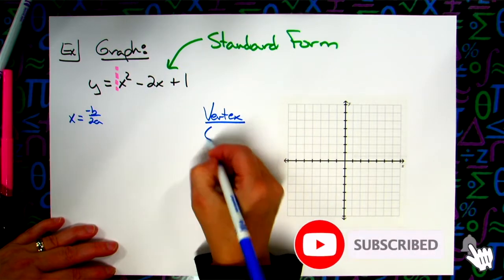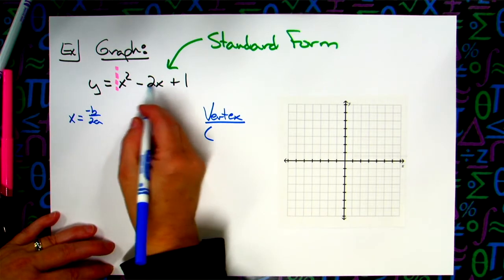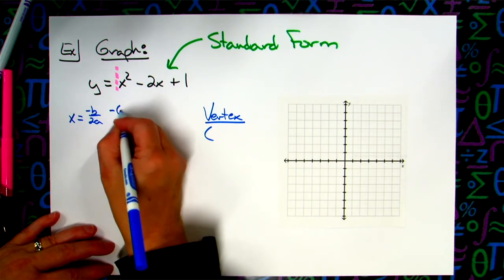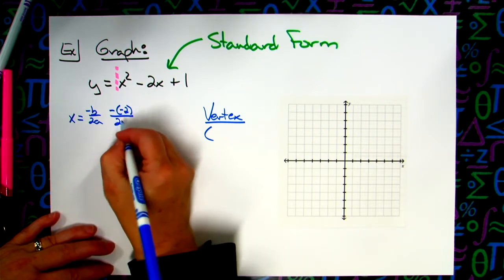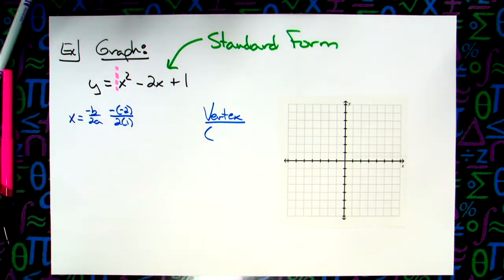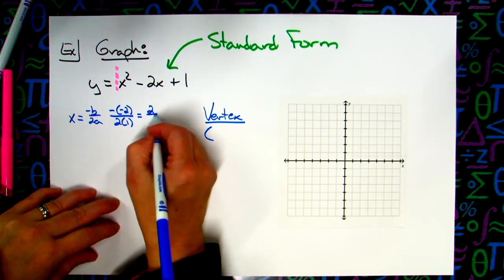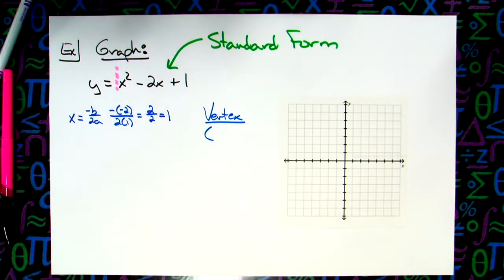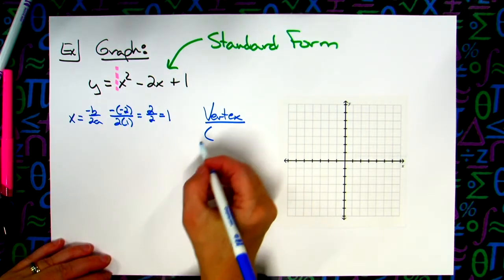And the first number I find is going to be my x coordinate right there. So b is already negative, so negative negative 2, all over 2 times a. a is 1. Negative times negative is positive, so 2 over 2. Oh, this one's an easy one. I got it down to 1. So that is the x coordinate of my vertex.